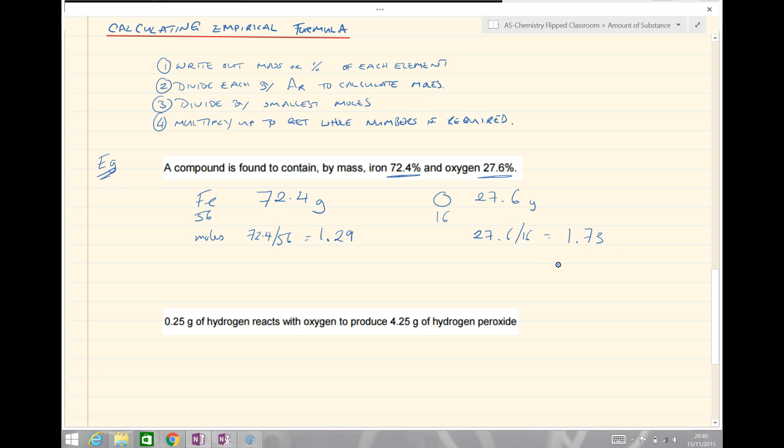We're going to ratio those together. To do that we divide by the smallest. The smallest of these two values is iron at 1.29. So, 1.29 divided by 1.29, hopefully your math gets you 1. Then we have 1.73 divided by 1.29, plug that into our calculators and we end up with approximately 1.33, 1.34.